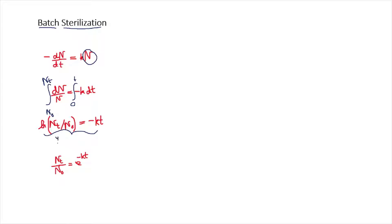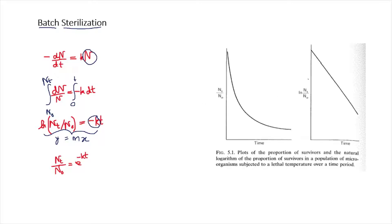We can compare this with y equals mx plus c, where c is 0 and m is minus k. Because of this negative sign, this is the equation of a straight line with a negative slope. So this is the graph of ln(Nt/N0) equals minus kt, where ln(Nt/N0) is plotted on the y-axis and time is plotted on the x-axis, and the slope of this graph equals minus k.